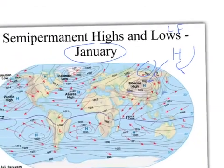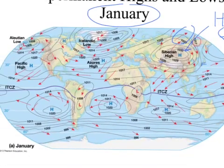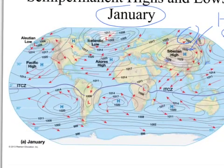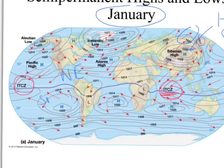This map is in January — we're going to see one in July coming up. I also want to highlight the intertropical convergence zone. In the context of what we've been talking about, the intertropical convergence zone is where the two Hadley cells — one from the Northern Hemisphere and one from the Southern Hemisphere — butt up against each other. You can see the northeasterly trade winds converging with the southeasterly trade winds right there.